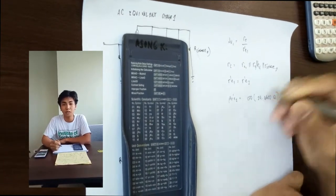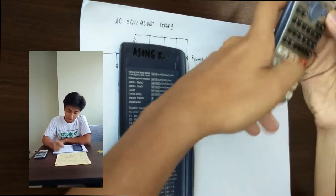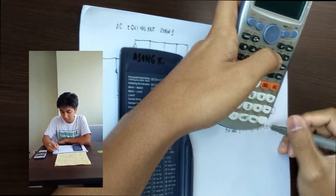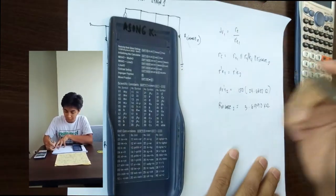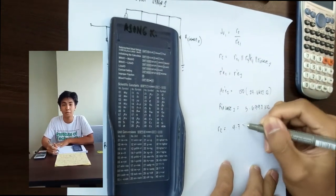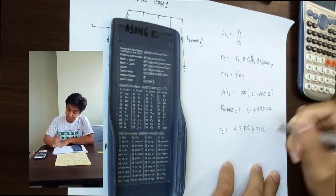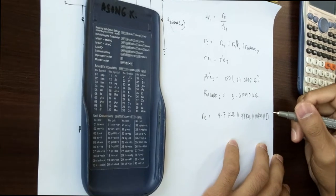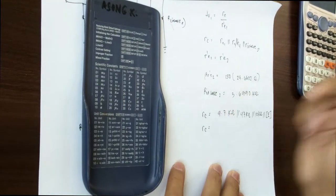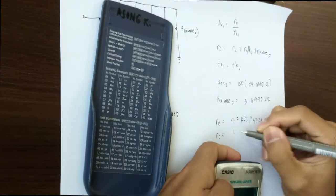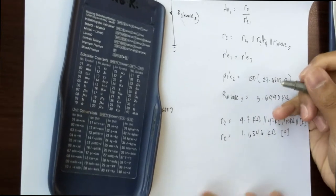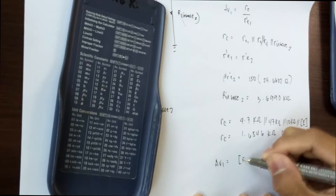R'C is equivalent to RC1 parallel R3 parallel R4 parallel the input resistance of stage 2. Rin is equivalent to beta times R'E2, but R'E1 and R'E2 are the same. Rin should be stored, so we can proceed to voltage gain. Av1 is equal to RC over R'E1.